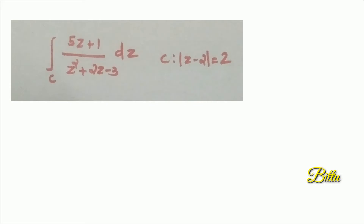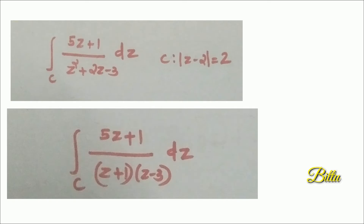This function has two singular points, but only one lies inside C. We focus only on singular points which lie within C. There is only one such point: 3. The given function can be written as (5z+1) divided by (z+1)(z−3). The singular part of (z−3) is 1/(z−3) with power 1. Since the power is 1, we apply Cauchy's Integral Formula. Note that Cauchy's Integral Formula is a particular case of Cauchy's Integral Formula for derivatives with N = 0.